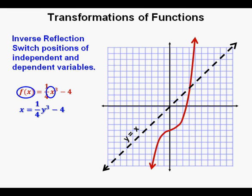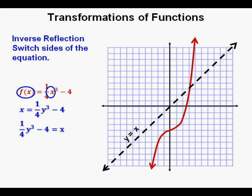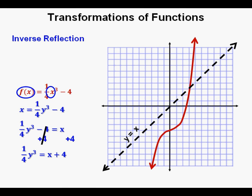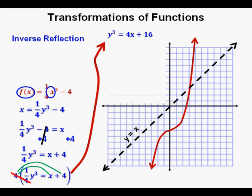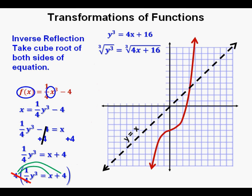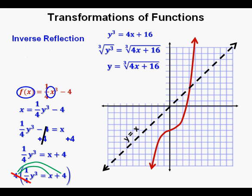Here is the function with x and y switched: x equals 1 fourth y cubed minus 4. Since we want to solve for y, we use the symmetric property of algebra and switch sides: 1 fourth y cubed minus 4 equals x. Adding 4 to both sides gives 1 fourth y cubed equals x plus 4. Multiplying both sides by 4 gives y cubed equals 4x plus 16. Taking the cube root of both sides, y equals the cube root of quantity 4x plus 16.